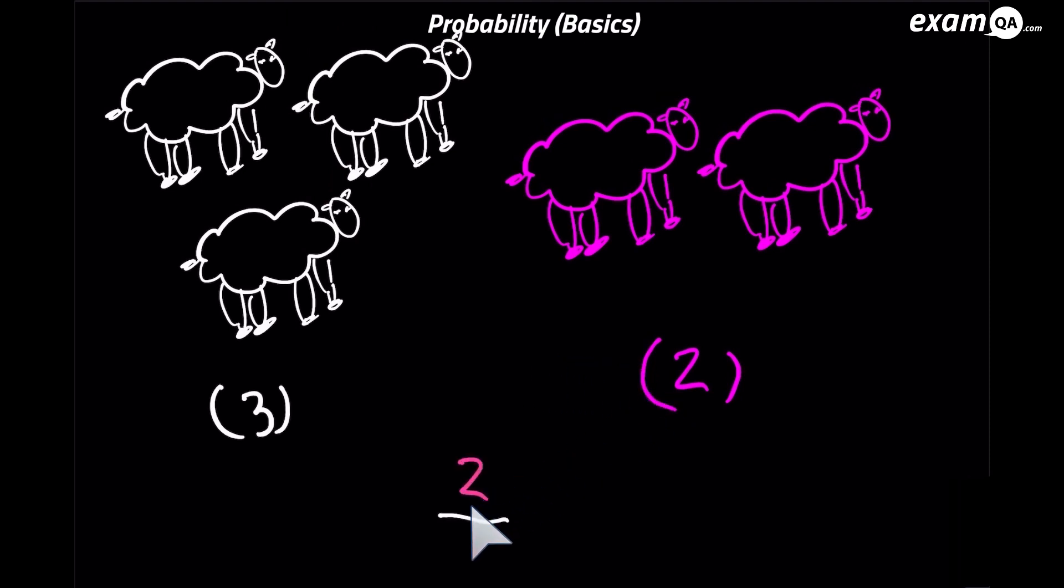So you do two. Now it's going to be over the total amount of sheep we've got, not over three. So be careful about that, because you're picking two out of a total of five. So it's two out of five.